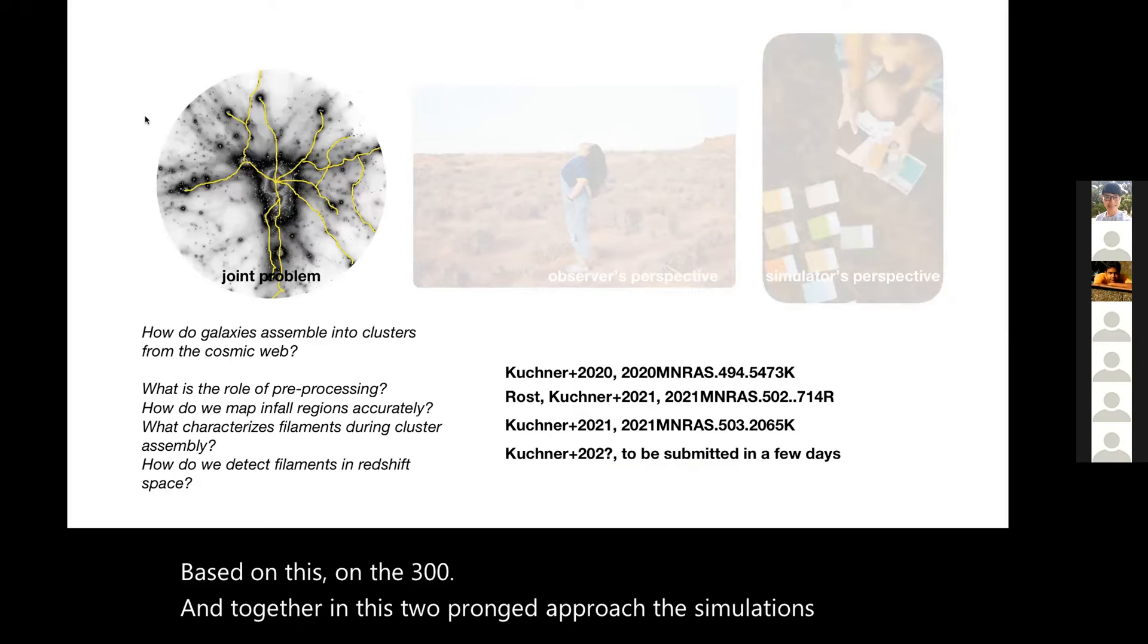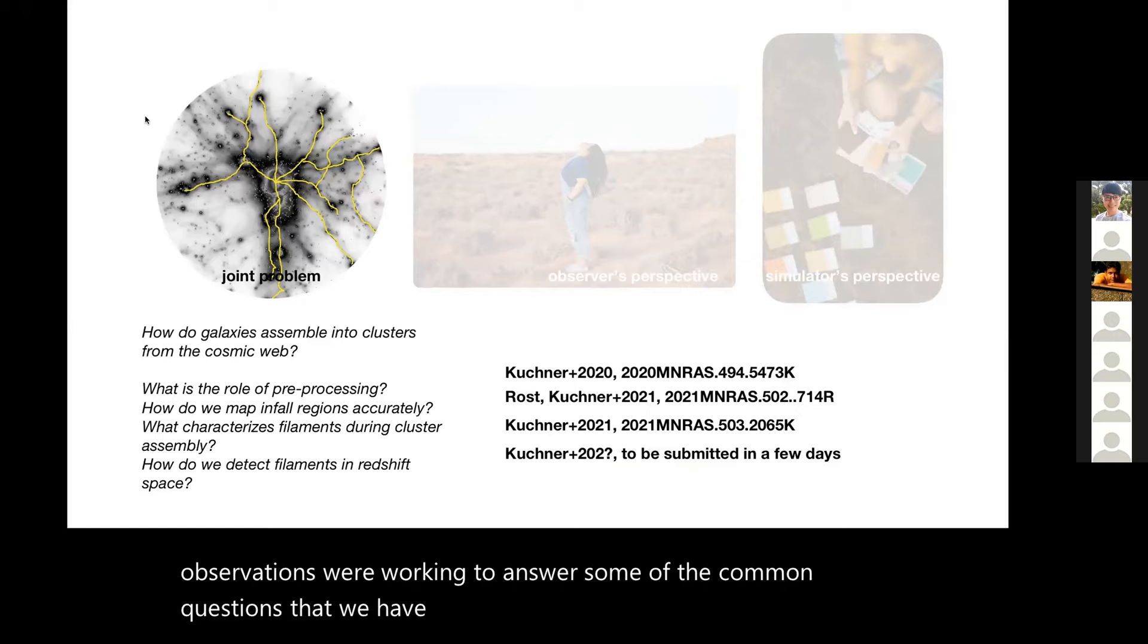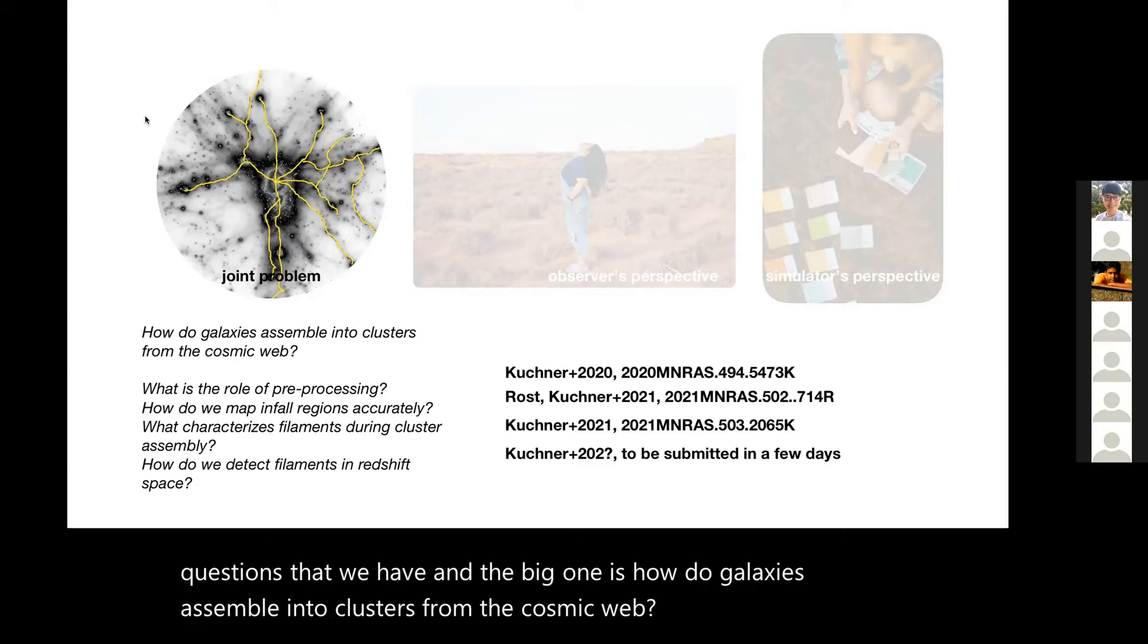Together in this two-pronged approach, simulations and observations, we're working to answer some common questions. The big one is how do galaxies assemble into clusters from the cosmic web? Theory tells us that the time a galaxy spends in a whole range of environments is important, but observationally this is hard to capture and address. The effect of previous environments, previous to galaxy clusters, on galaxy evolution is still unclear.